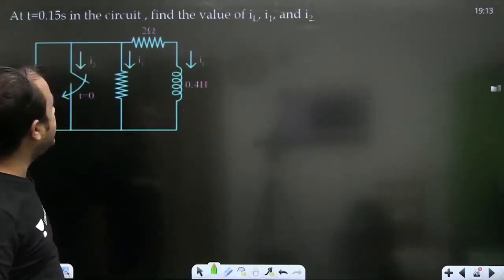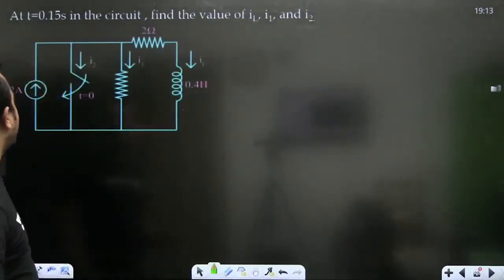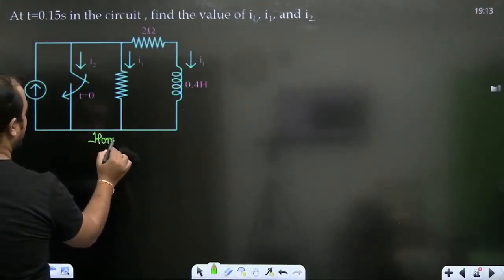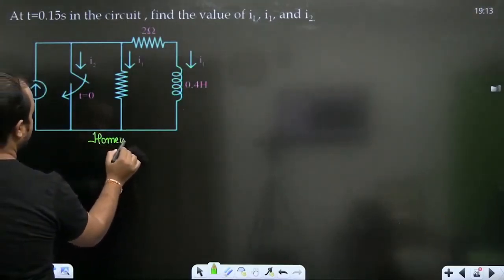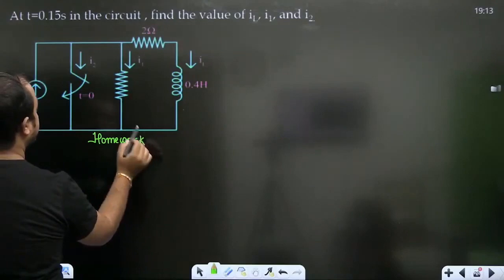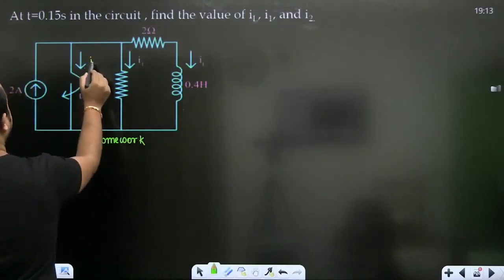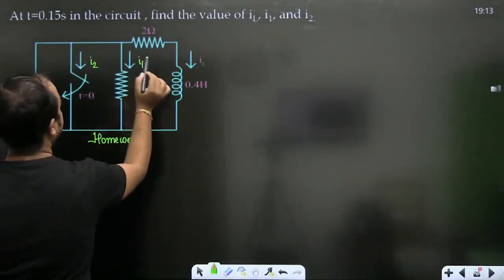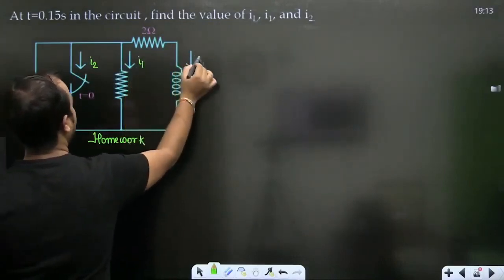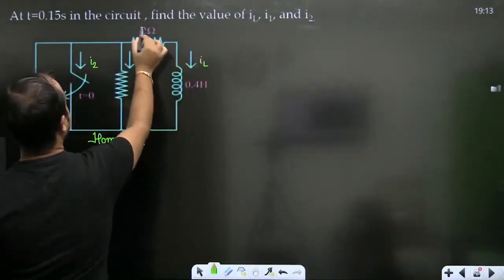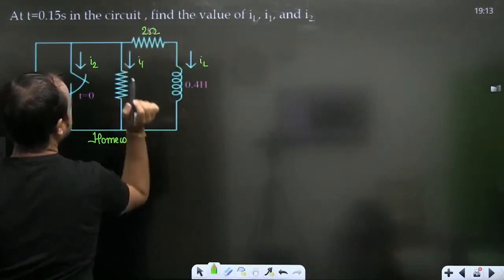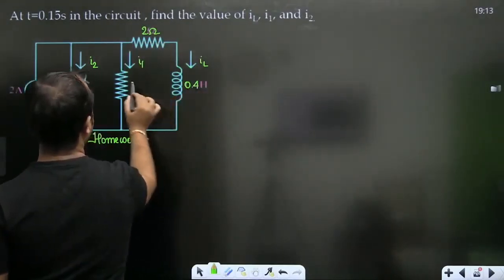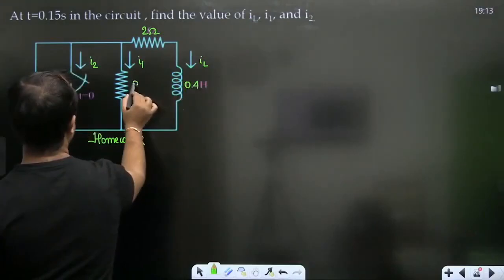Ek homework de raha hoon — at t = 0.15, what is the value? Next lecture mein discuss bhi karenge, aur next lecture mein source vale circuits bhi padhaaunga — I1 aur IL ke saath. 2 ohm aur 0.4 henry vala circuit hai.